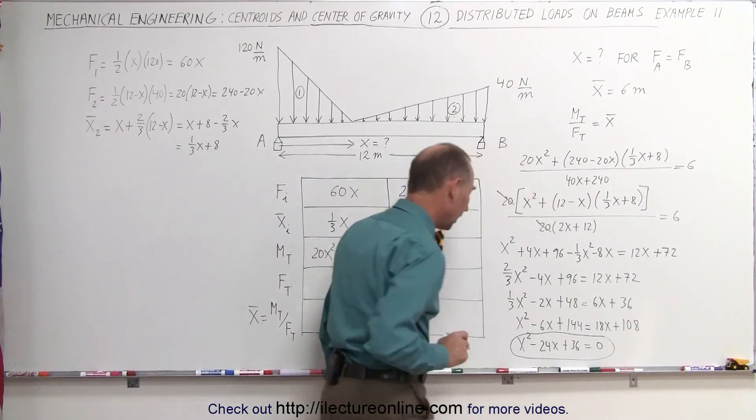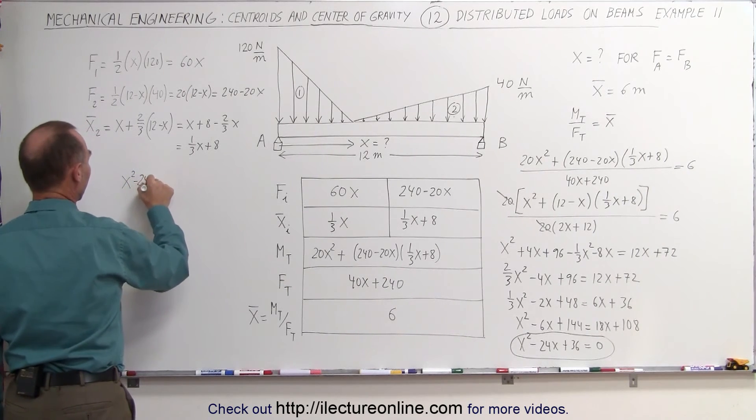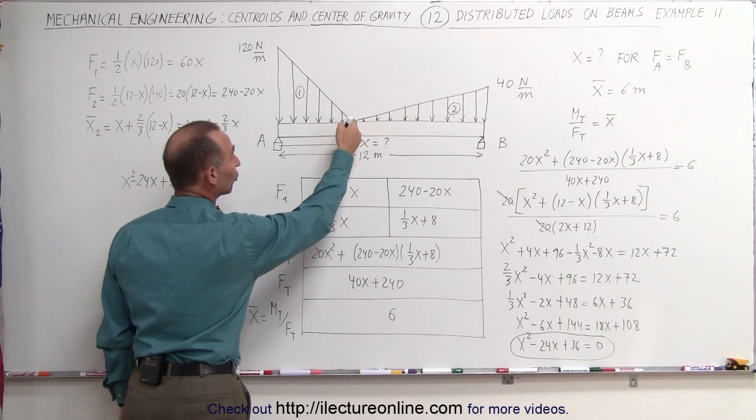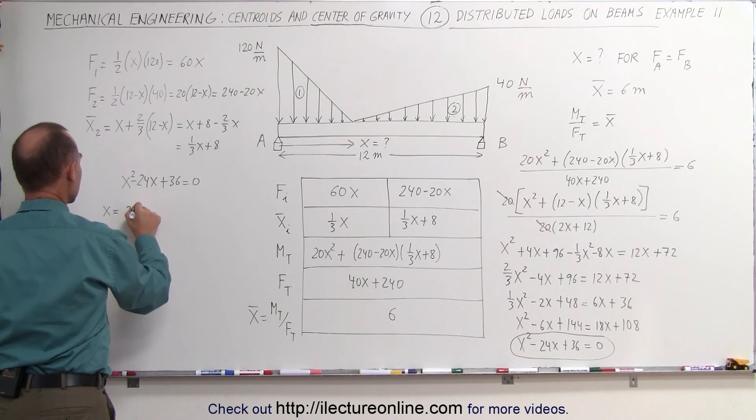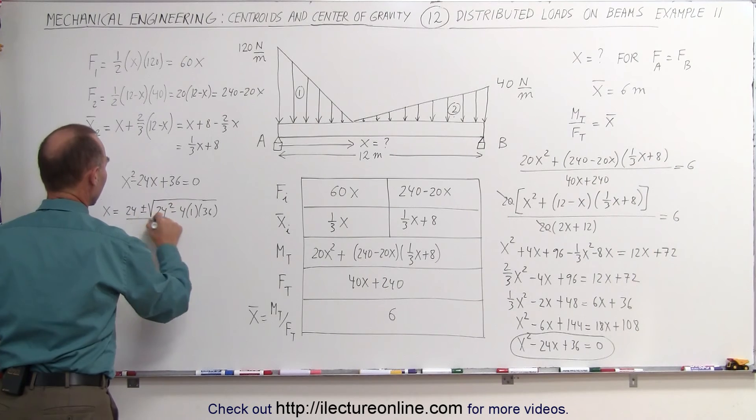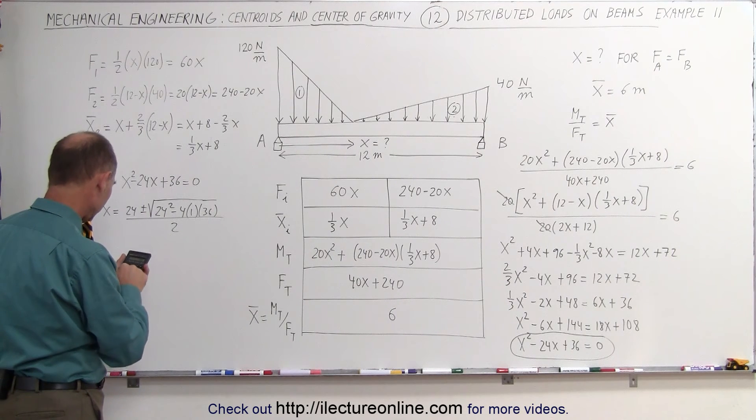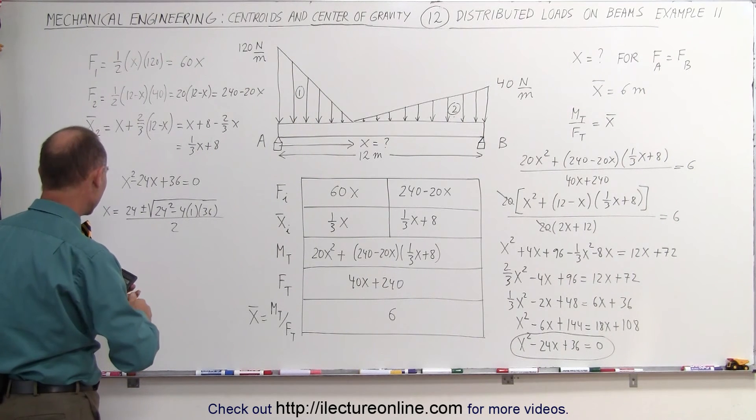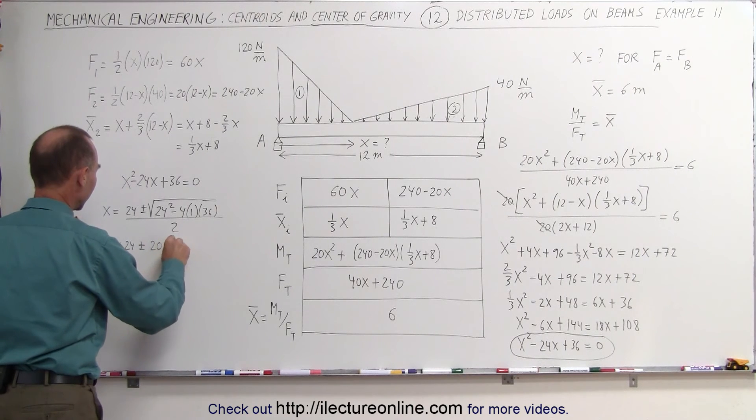Now all we have to do is solve this quadratic equation. So we have x squared, minus 24x, plus 36 equals 0. And in case we forgot what we're trying to do, we're trying to find the point where this should go to 0 for both distributed load segments. x is equal to minus b, plus or minus the square root of b squared, minus 4 times a times c, all divided by 2a. For that, we need a calculator. We have 4 times 36, minus sign in front of that, plus 24 squared, take the square root of that. We get x is equal to 24 plus or minus, 20.78, divided by 2.